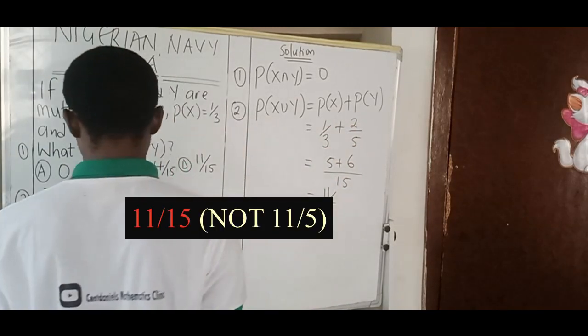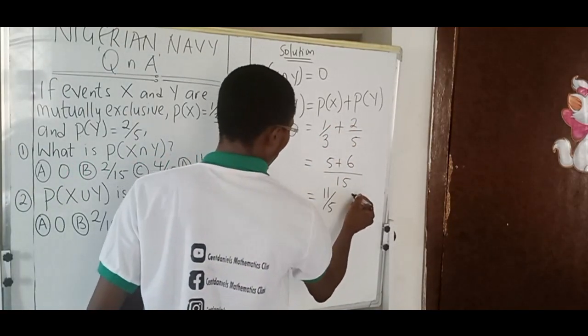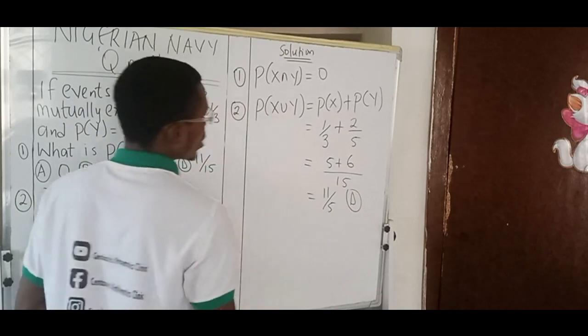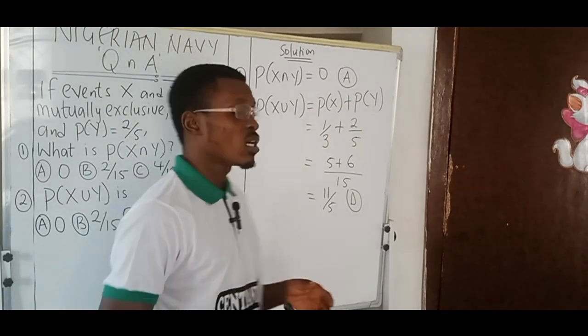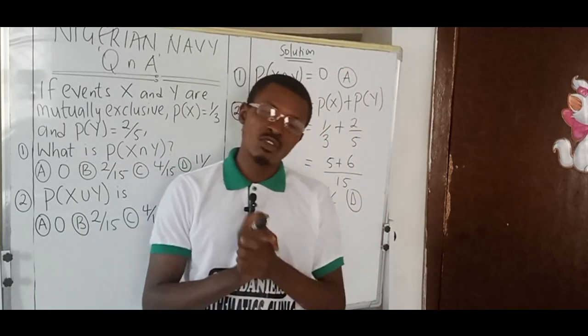And that is given by option D. Option D gives the correct answer to number two, and option A gives the correct answer to number one. That is all we have for you for this lesson. Thank you for watching, and please, dear viewers, do not forget to subscribe.